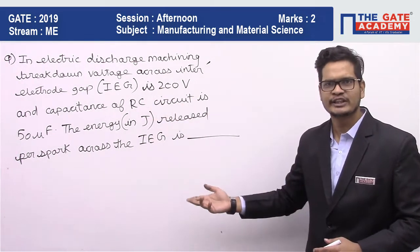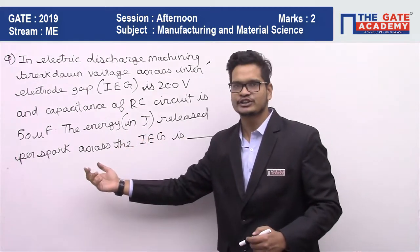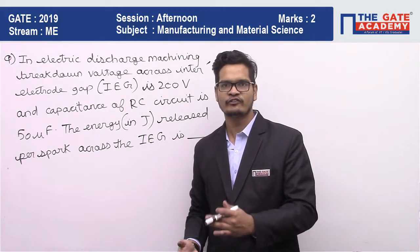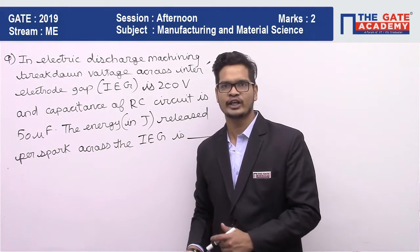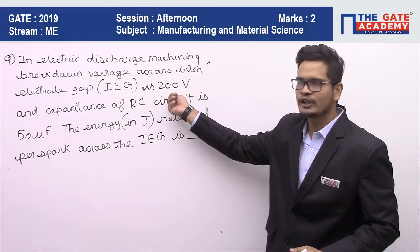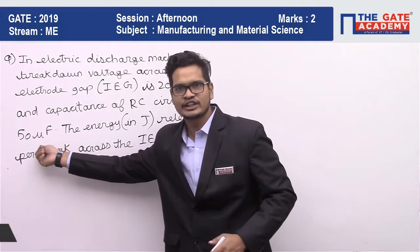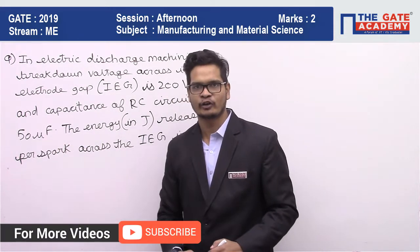This becomes a very easy question. What is the energy released? The formula is 0.5 × Vd² × C. Vd is given as 200 volts and capacitance is given as 50 microfarads.